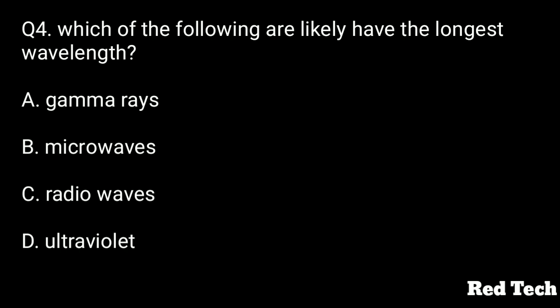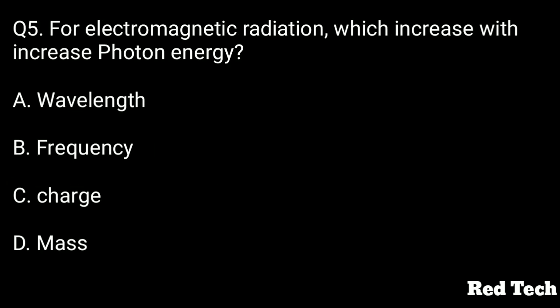Question number four: which of the following is likely to have the longest wavelength? Option A is gamma rays, option B is microwaves, option C is radio waves, option D is ultraviolet. The right answer is option C, radio waves.